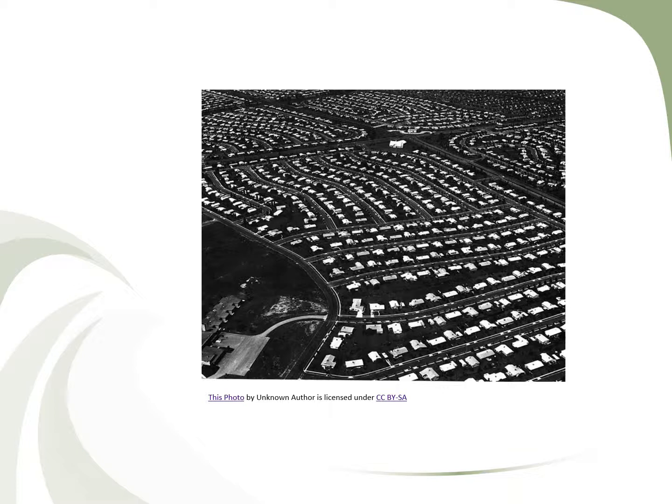Here's a picture of what one of the suburbs looked like. You can see how many of the homes were designed the same, and the streets are kind of lined out parallel to each other. These were small communities that we know as suburbs, and obviously we still have suburbs today. This is the beginning of suburbia, as they call it.